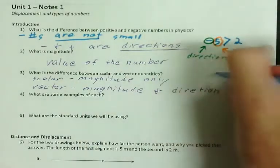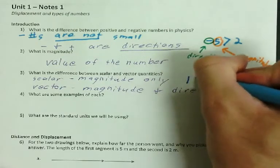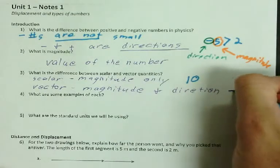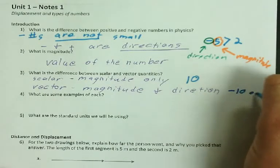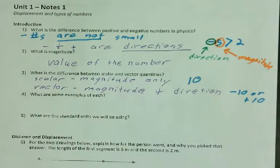So for example, if something's magnitude only, something like 10 would be a scalar, but a vector might be negative 10 or positive 10. So a number that's got a direction too.